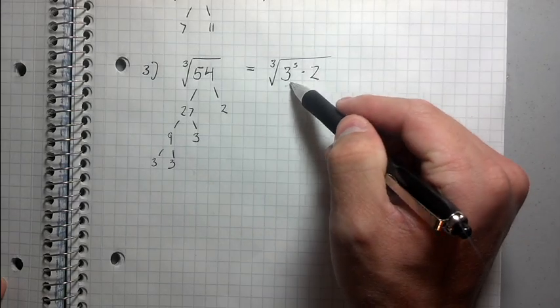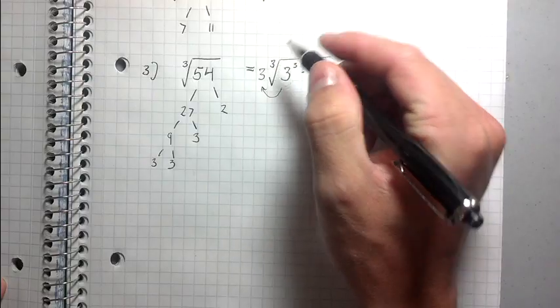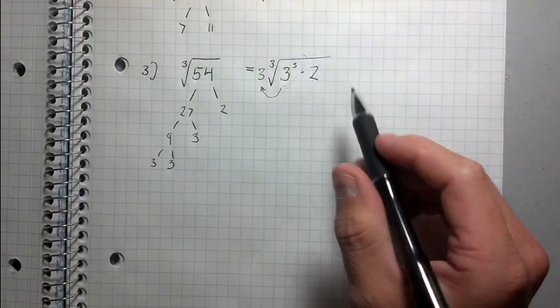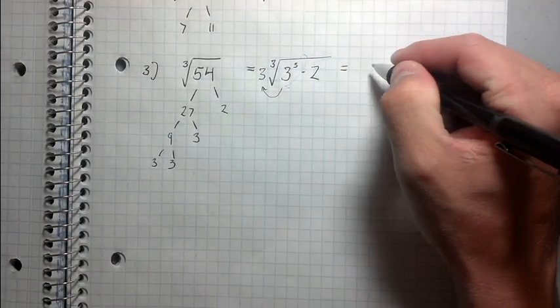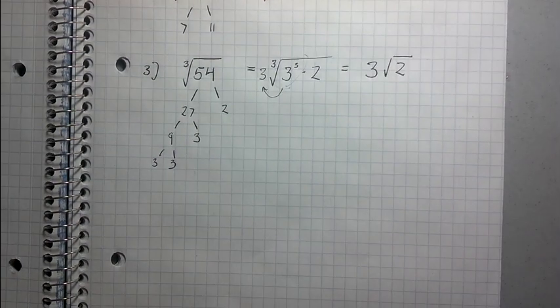So what that means is that this 3 cubed is going to come outside and just become a 3, because the cube root of 3 cubed is 3. So then I'm going to rewrite this as 3 root 2. Did you follow that?